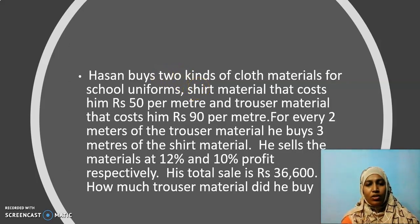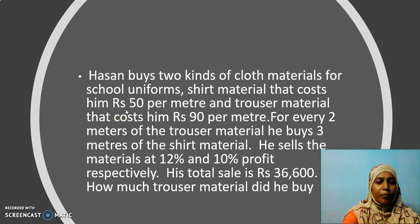Here we are going to deal with equations where we have variables on both the sides. The question is, Hassan buys two kinds of cloth materials for school uniforms: shirt materials that cost rupees 50 per meter and trouser material that costs him rupees 90 per meter. For every 2 meters of trouser material, he buys 3 meters of shirt material. He sells the materials at 12% and 10% profit. His total sale is 36,600. How much trouser material did he buy?